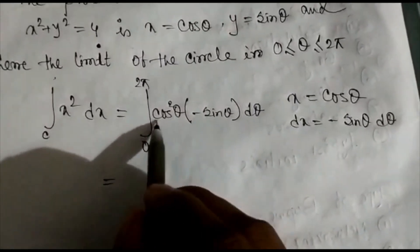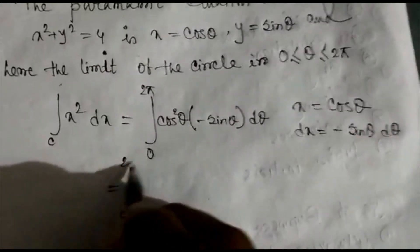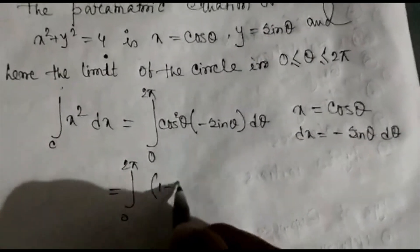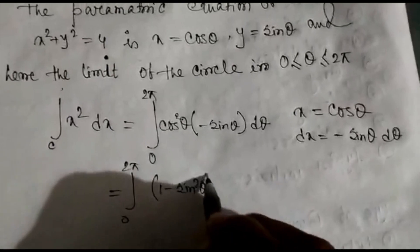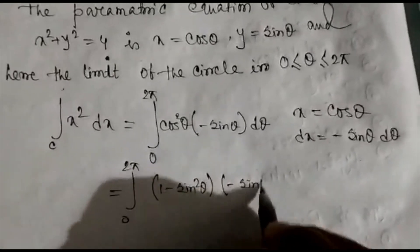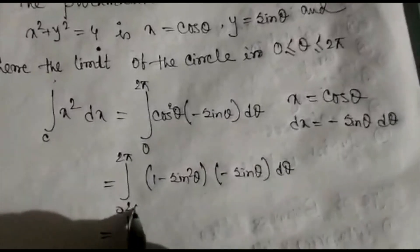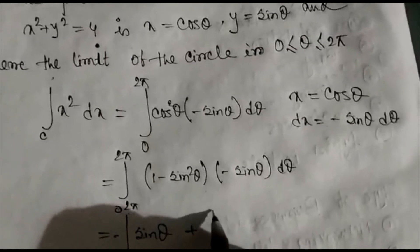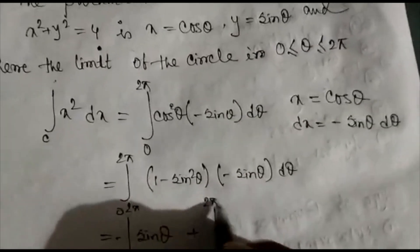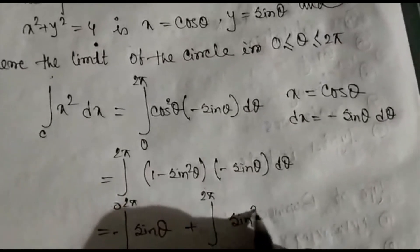We transform cos²θ into terms of sin θ using the identity 1 − sin²θ, multiplied by −sin θ dθ. Expanding and simplifying, the minus signs give a positive, resulting in the integral from 0 to 2π of sin³θ dθ.